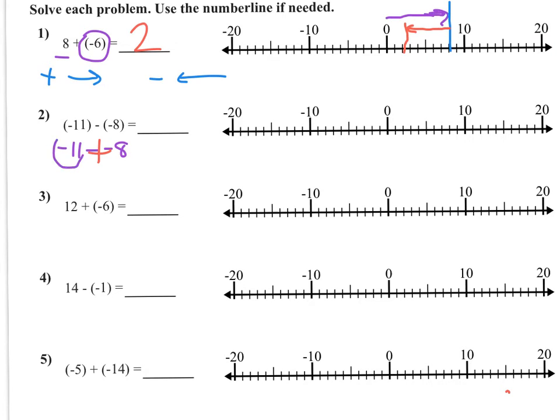Now the first number I see is negative 11. I'm going to start at 0 and move all the way over to negative 11 right here. Then the next number I see is positive 8, so now I'm going to move right 8: 1, 2, 3, 4, 5, 6, 7, 8. That takes me to this number right here, which is a negative 3.